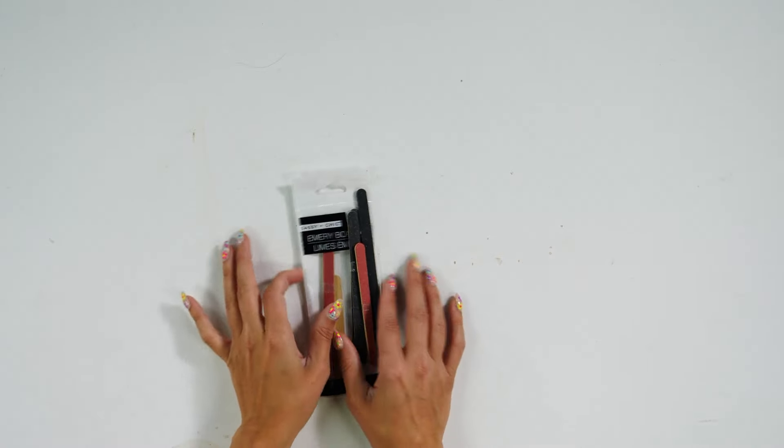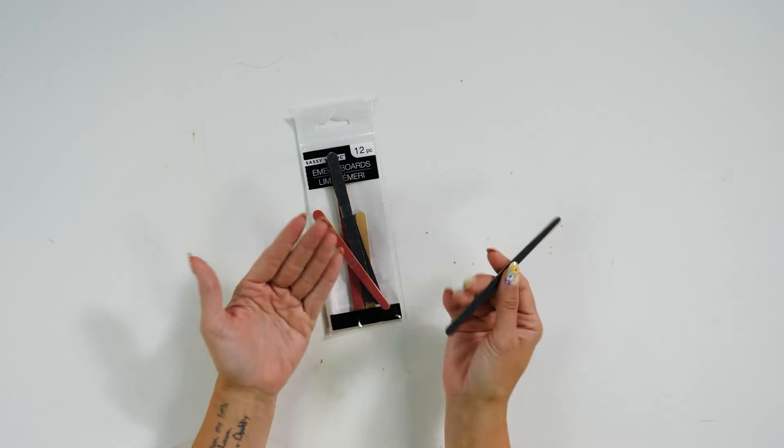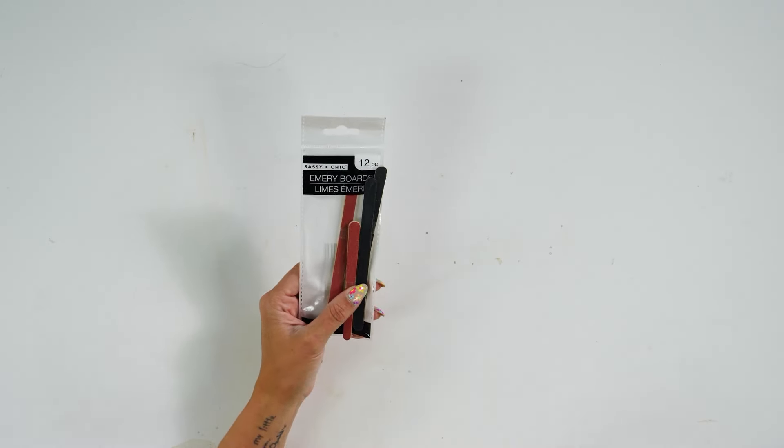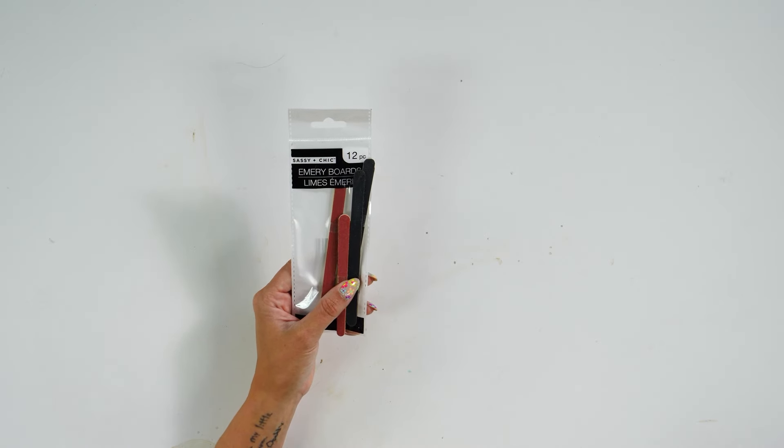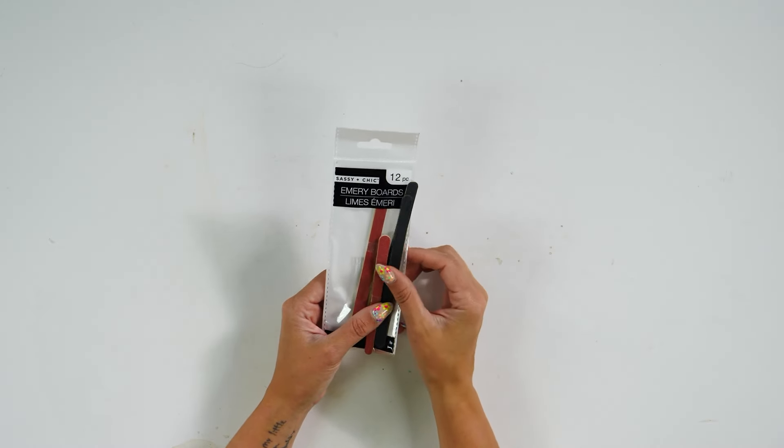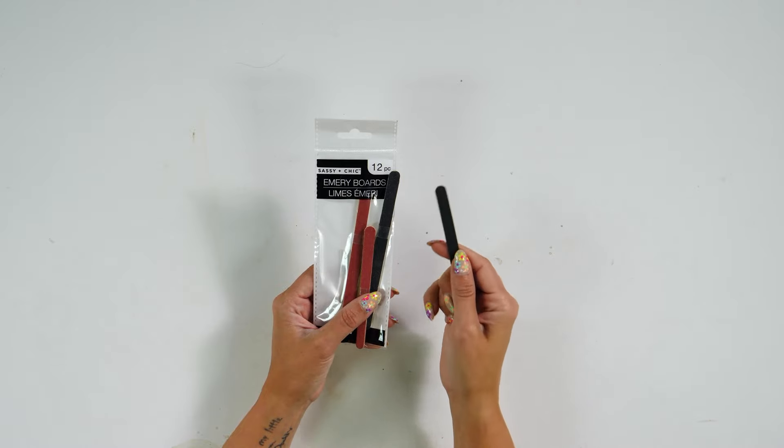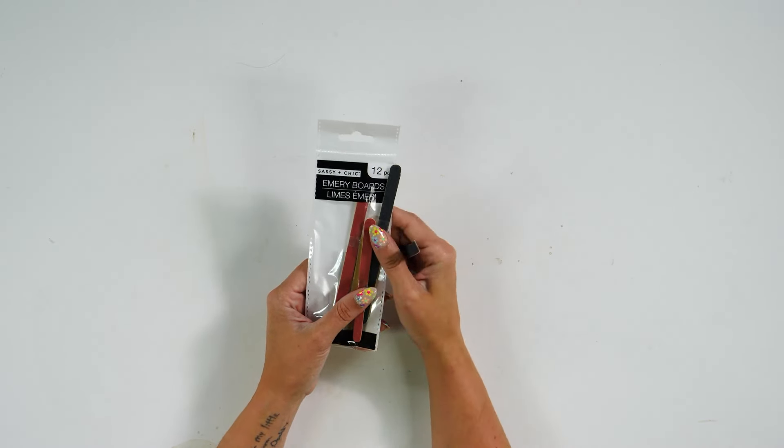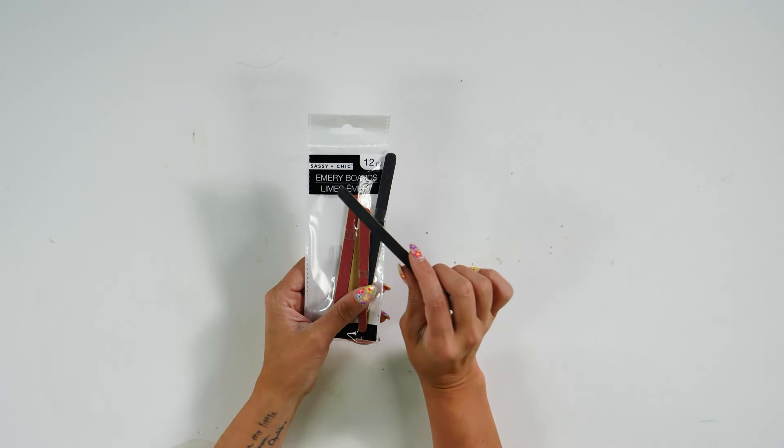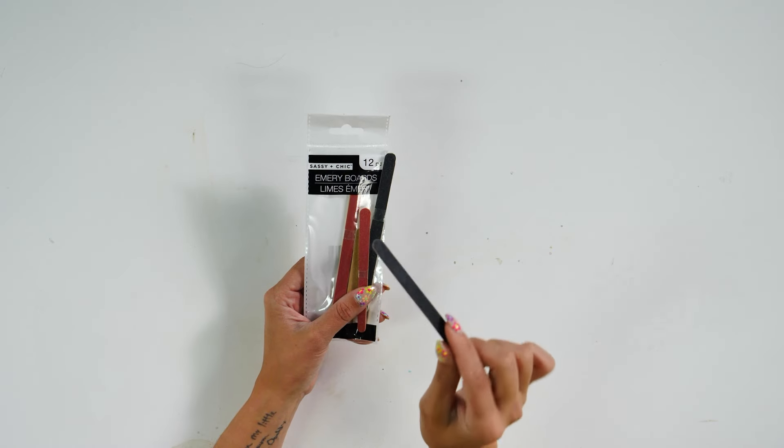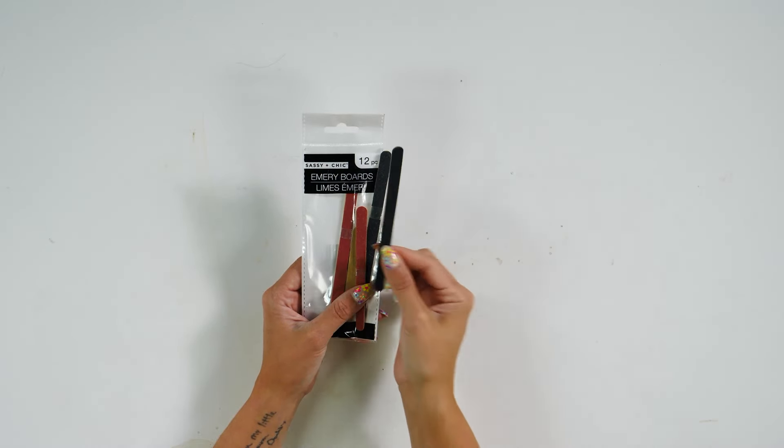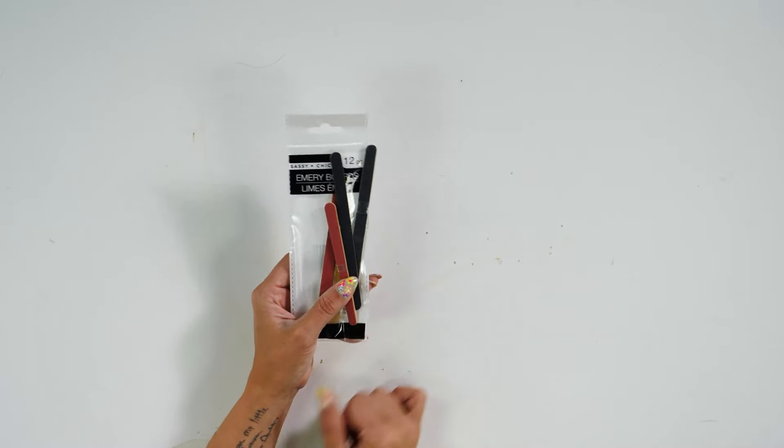The next thing are these emery boards, and these are used as nail files originally. However, these are great if you want to sand down little edges of basswood or distress paper. A lot of times we'll use this to sand down the extra edges off of basswood because if you get a piece of sandpaper it can be hard to get in those little delicate areas. But these emery boards are great to get inside letters after you cut the basswood or wood veneer.